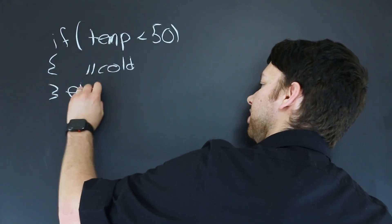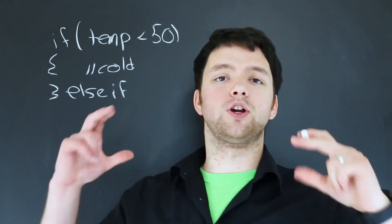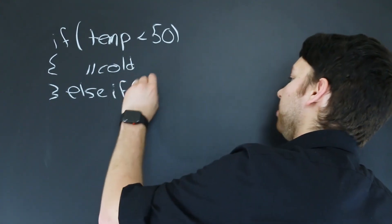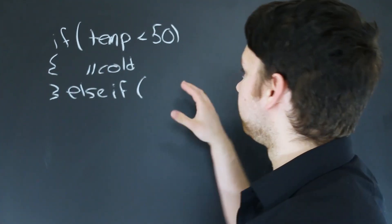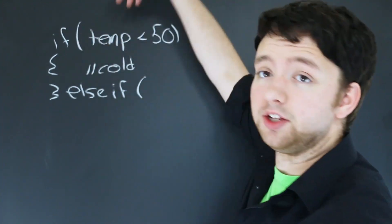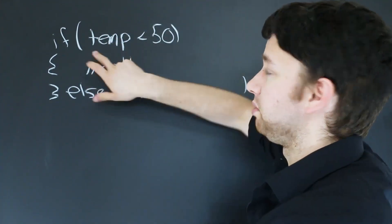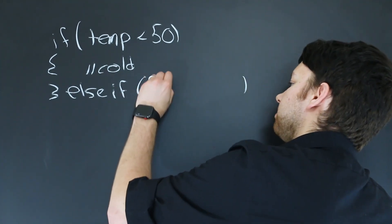Now what you do is you put else if and this is actually going to need another condition. So you put another pair of parentheses with another condition in here. Now you're not restricted on what you can put in here so you can use different variables than the if statement. Usually though you're going to be using similar variables but just in different ranges. So you might do something like this.